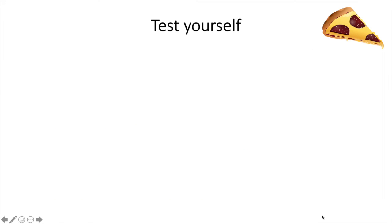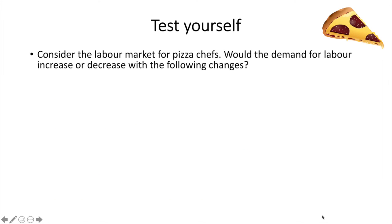Let's see how you did. The instances where labour demand would increase are in green. The situations in which labour demand would decrease are in red. For number one, the publication of this research would likely result in a fall in demand for pizza, thus reducing the demand for the labour producing it.